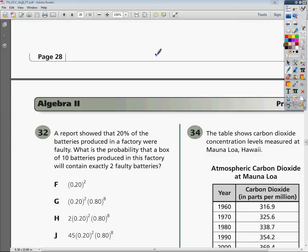This is kind of an interesting problem here. Before you can even solve this, you're going to have to know a formula. This is a binomial probability problem, and that binomial probability formula is going to be the probability of x equals n choose x, p to the x, q to the n minus x.